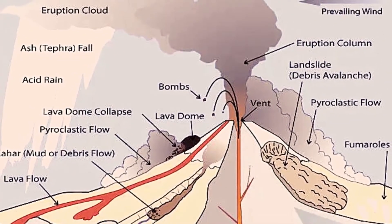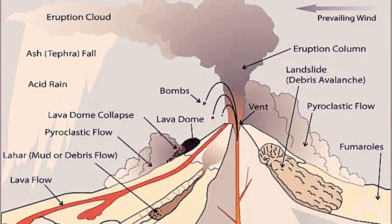Vent: magma is lighter than the solid rock around it, so it rises. Eventually some of the magma pushes through vents, creating a volcanic eruption. Lava flow: magma that erupts is called lava. If magma is thin and runny, gases can escape easily from it. When this type of magma erupts, lava flows outside the volcano. Lava flows are the molten rock that oozes onto the earth's surface after a volcano eruption. Volcanic bombs: these molten rocks are thrown out from a volcano and are at least 66 millimeters in size.